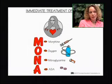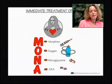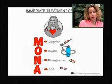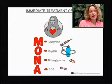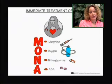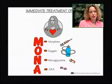Immediate treatment of an MI includes the acronym MONA. Morphine helps control the patient's pain and decreases the preload and afterload of the heart. We give oxygen via nasal cannula to support oxygenation and breathing. Nitroglycerin is a medication given to help dilate the blood vessels. We will also give aspirin, which helps the platelets become less sticky.